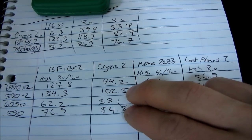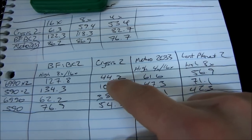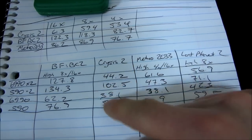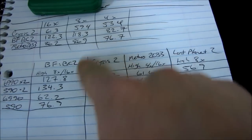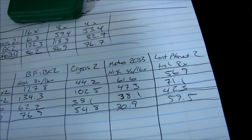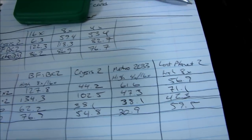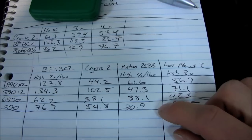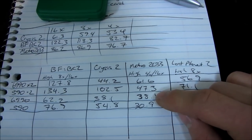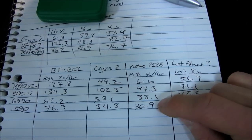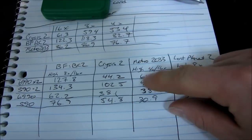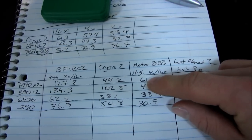The 590s scaled very well in Crysis 2. The 6990, besides a flickering bug which made the game pretty much unplayable, also didn't scale very well. AMD has some work to do on the Crysis 2 performance of their 6990, but I'm sure that's something they'll resolve with a driver update in the future. In Metro 2033, the 6990 scaled quite well, adding another 50% performance, as did the 590. However, the 590 still falls short of the Quad Crossfire setup in terms of overall performance.